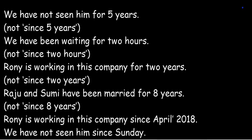We use both for and since to say how long something has been happening. We use for to say a period of time — one month, three weeks, two years, etc. Whereas we use since to say the start of a period of happening, for example: Sunday, 2015, 6 o'clock.